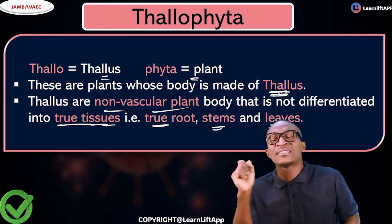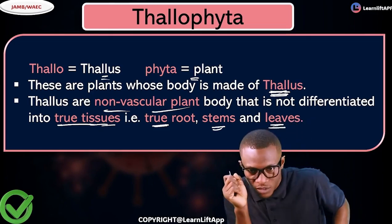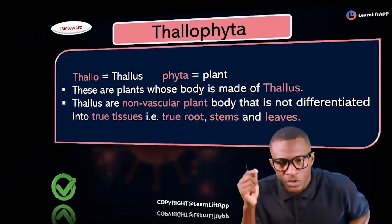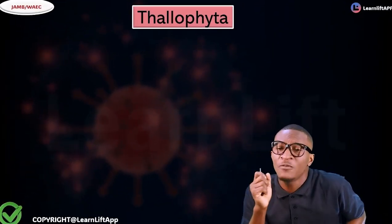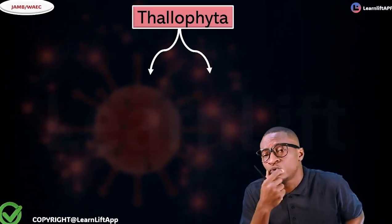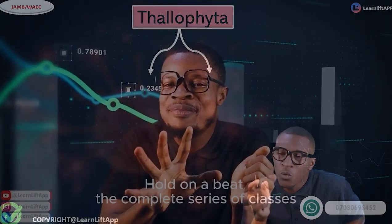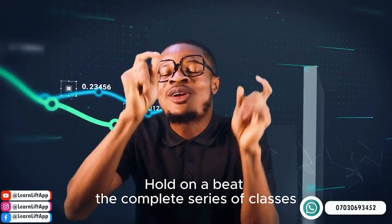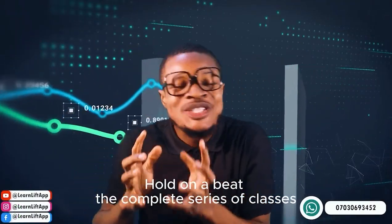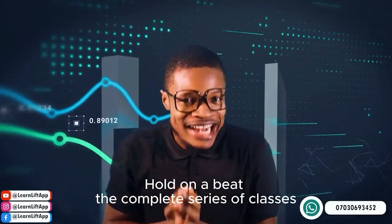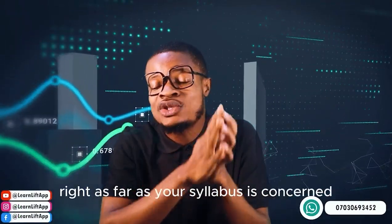Thallophytes are plants that do not have true roots, true stem, and true leaves. They are said to be thallus, hence the word thallophyte. Now, what is the classification of thallophytes? Thallophytes are divided into two main groups.